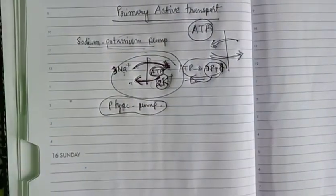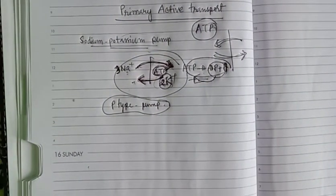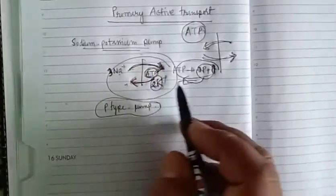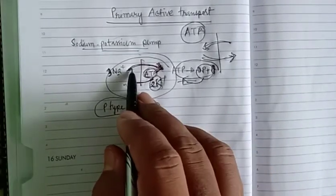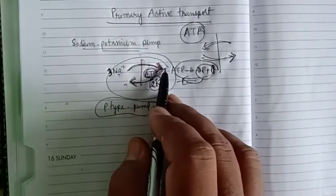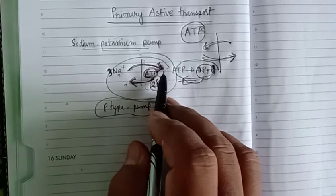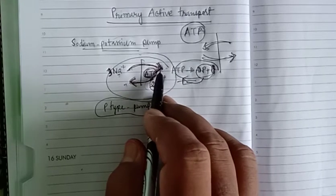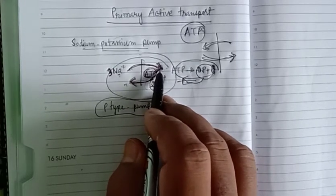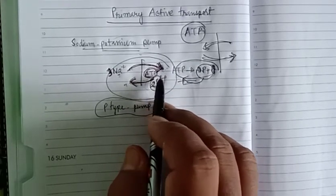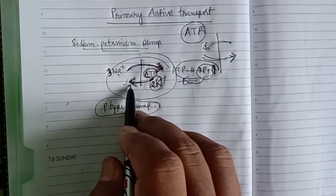The sodium-potassium pump binds ATP and three sodium ions. Then phosphorylation happens at the pump so that it changes its shape. This allows sodium to leave the cell and potassium ions to be picked up inside.